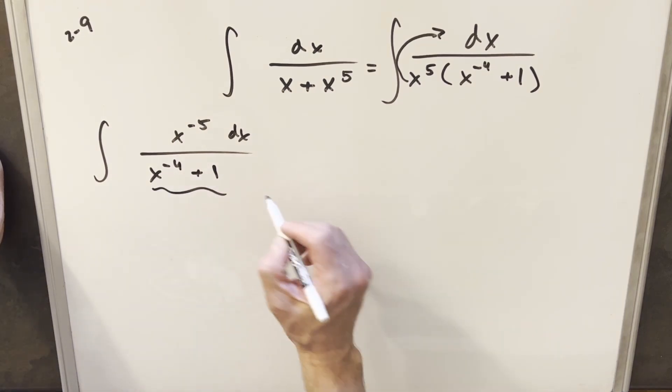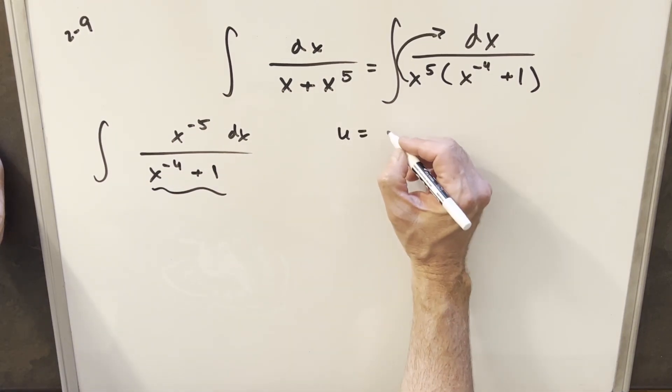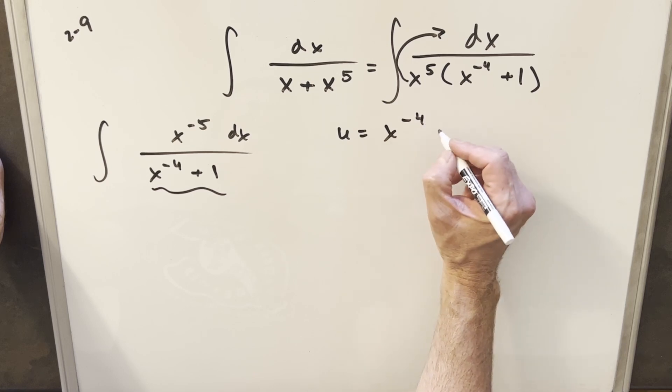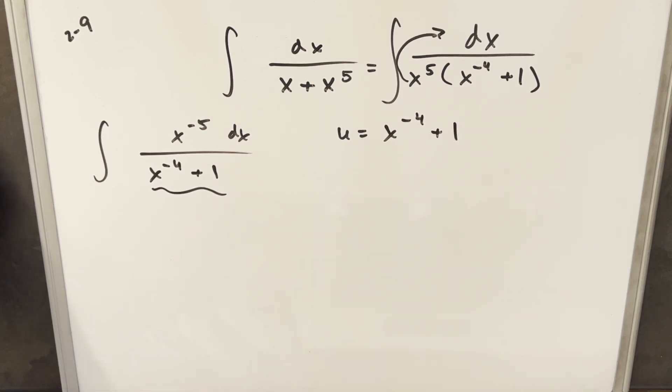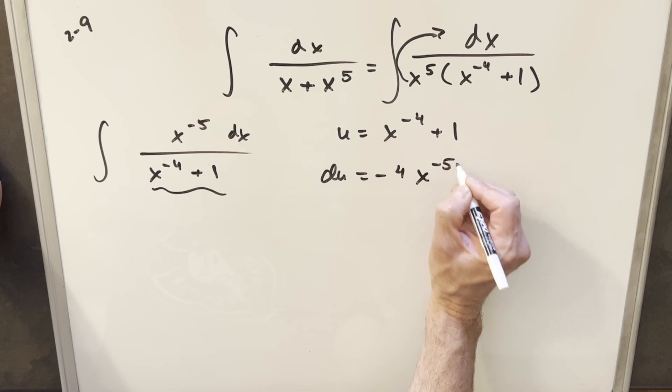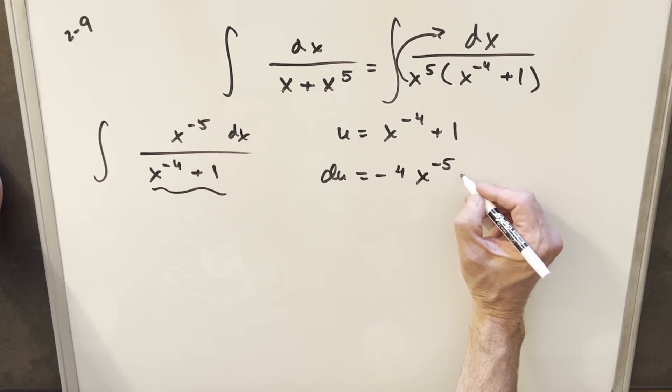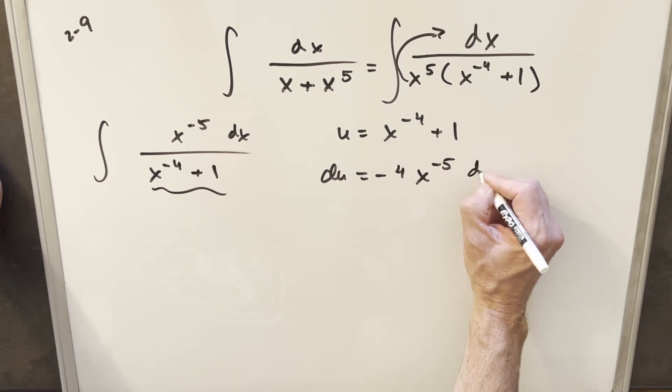So for my u, I'm going to make my u equal to the denominator. I'm going to say u equals x to the minus fourth plus one. I'll take my derivative. We'll see that du is going to be, power rule on this, minus four x to the minus fifth—perfect. Derivative of one is zero, and then we just need our dx.